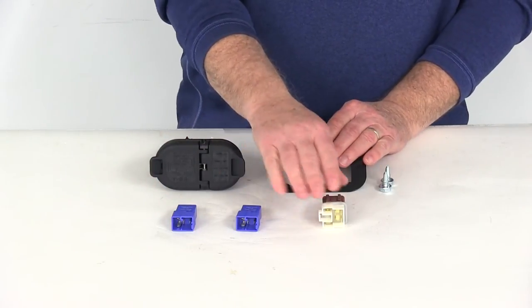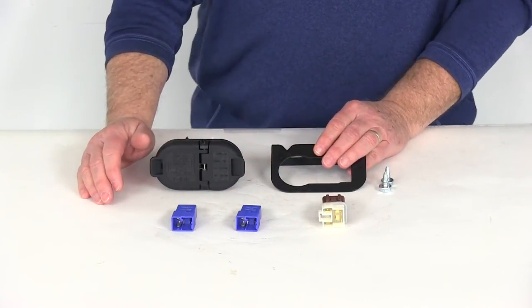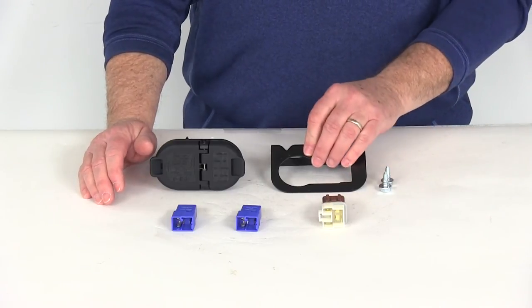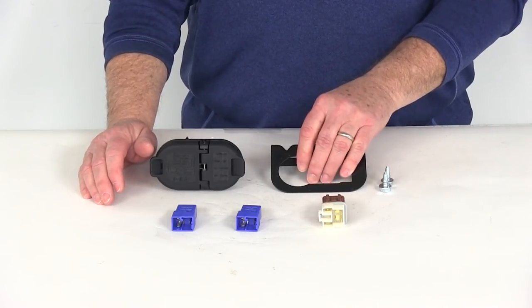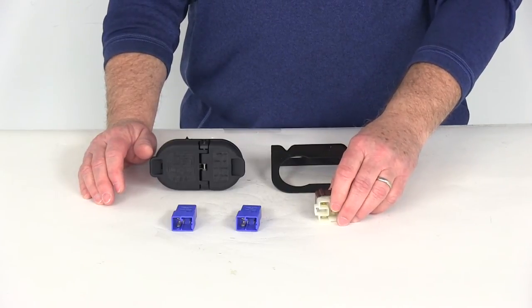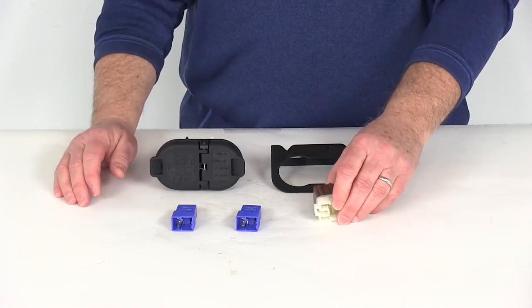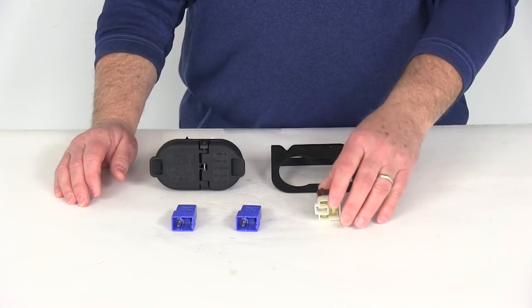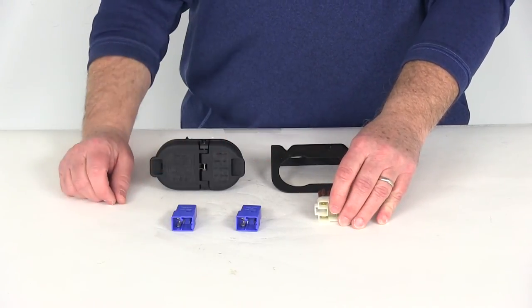When you go to install these relays, you go to your relay panel which is usually on the passenger side under the hood right near your battery. Remove the cover from the relay panel and if you look on the panel you usually have a map of what each location is.